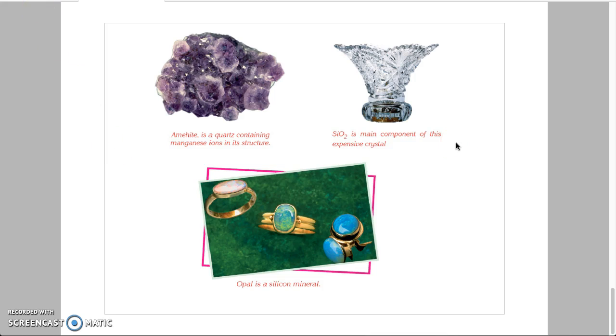In the pictures, you can see some silicon dioxide minerals, for example amethyst or opal. Silicon dioxide is also used in production of expensive crystals.